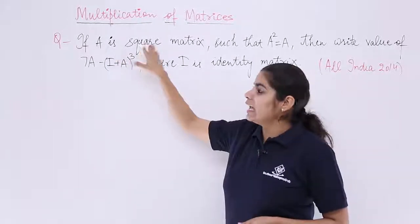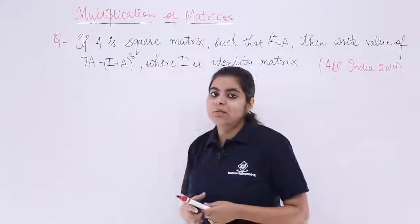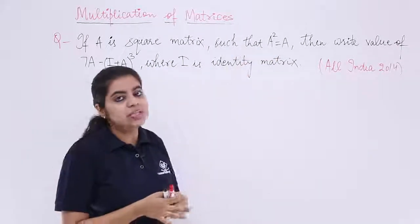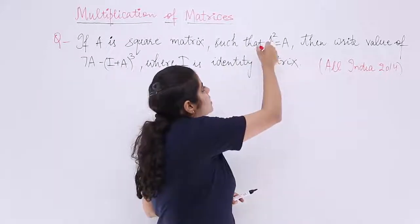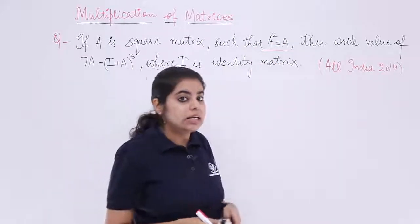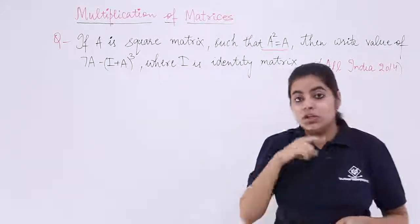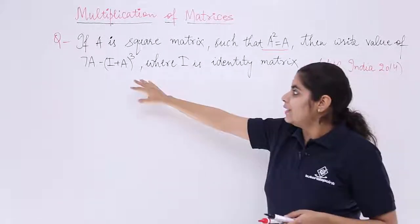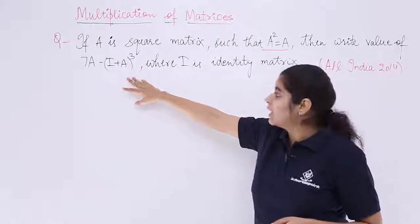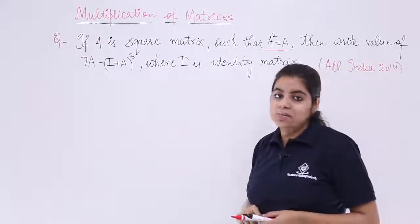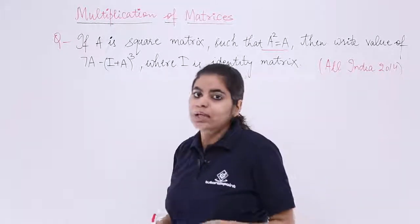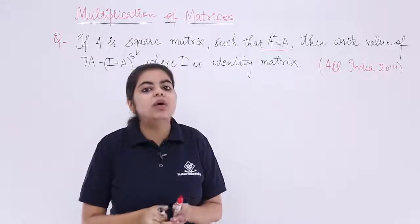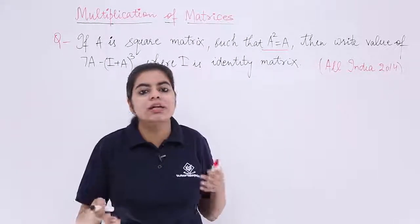The question is: if A is a square matrix such that A squared is equal to A, then write the value of a given expression, where I is the identity matrix. We already know that I is always the identity matrix, and the order depends upon what is accordingly given to us.